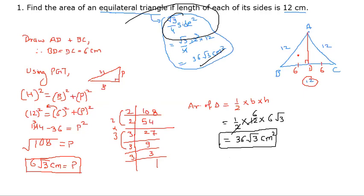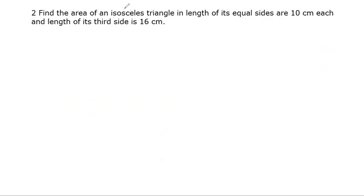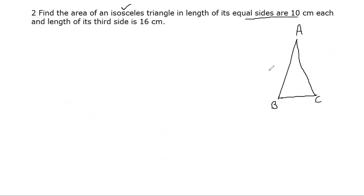If you liked this video, please like and subscribe to the channel. Moving on to the next question — question number 2: find the area of an isosceles triangle. An isosceles triangle has two equal sides. The equal sides are 10, so both equal sides are 10, and the length of the third side is 16. This is a rough figure.